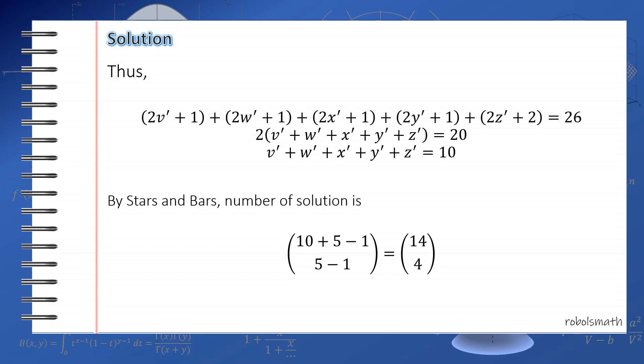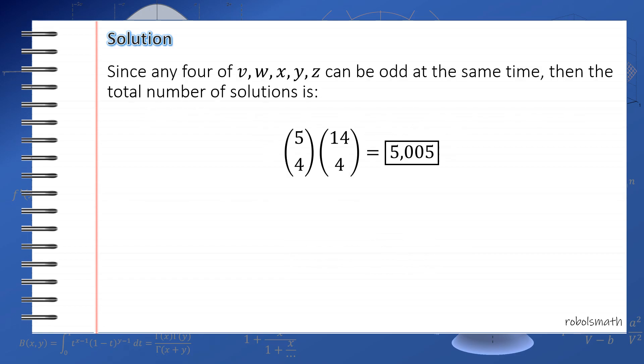Therefore, the total number of solutions is (5 choose 4) times (14 choose 4) = 5005. The factor of (5 choose 4) is important for this one because this accounts for the total number of cases, which we try to generalize in the first part of the solution when we assume that the four odd integers to be v, w, x, and y, when in fact, they can be any of the (5 choose 4) combinations.